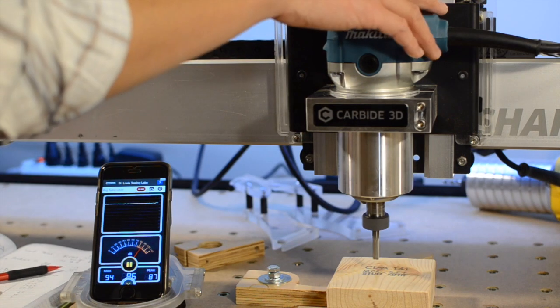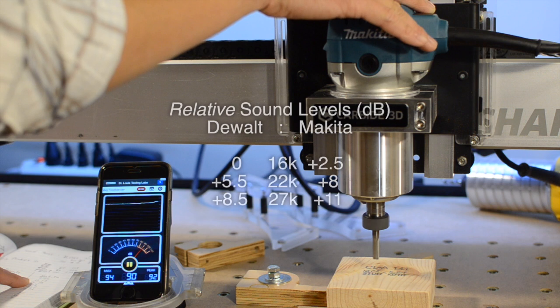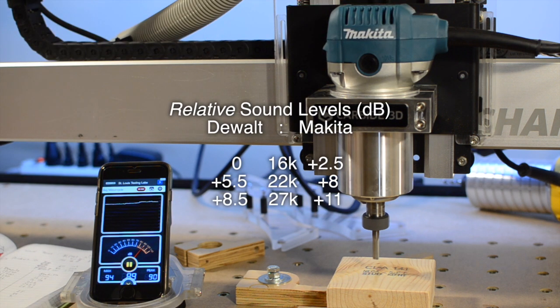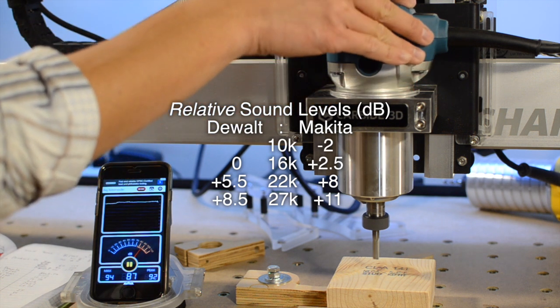However, I was surprised to find that it's actually louder than the DEWALT. At 27,000 RPM, the Makita was several decibels louder than the DEWALT. It isn't all bad news for the Makita though, because you do have the option to run it below 16,000 RPM, and in this range it's definitely quieter than the DEWALT at its lowest speed.